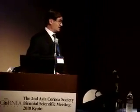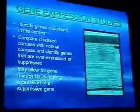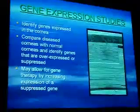Once we've done the segregation analysis, let's go on to molecular genetic studies. We've done gene expression studies, linkage analyses, genome-wide association studies, and we've looked at some candidate genes, and I'm going to walk you through all four of these very carefully. With gene expression studies, what you try to do is identify genes in the cornea, compare disease with normal corneas, and this may allow for therapy by increasing or suppressing a gene in the future.